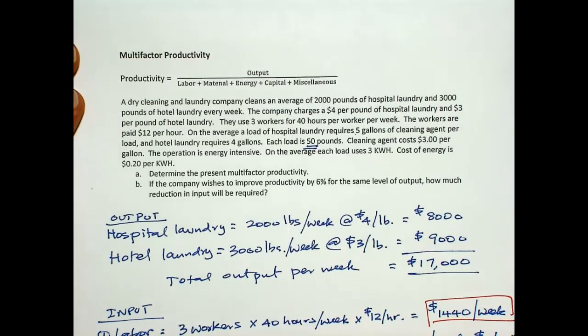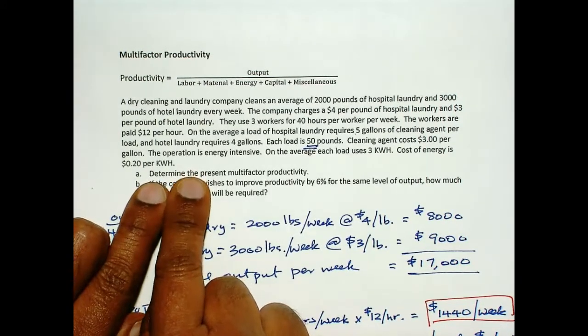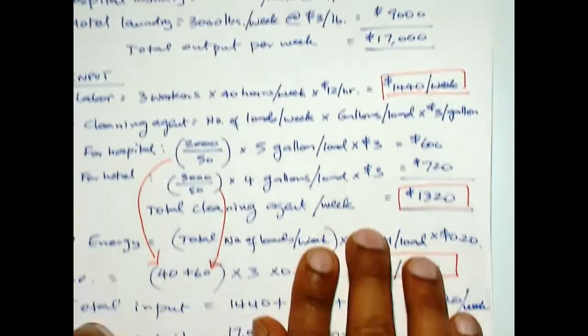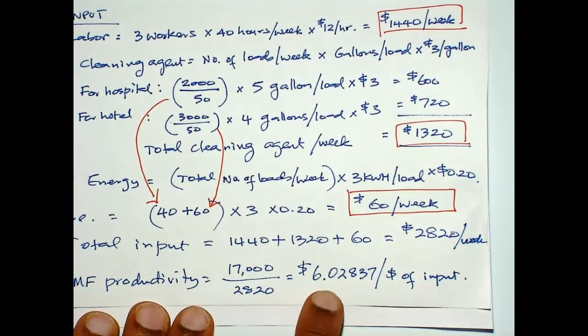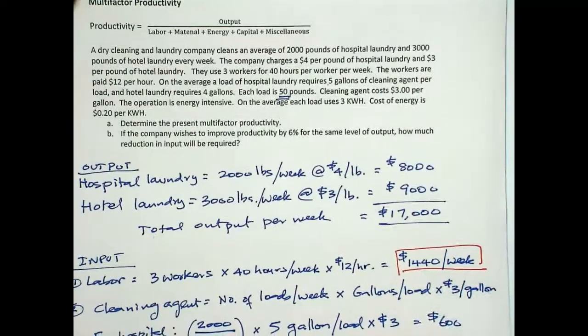Okay, now in the previous video we computed the multi-factor productivity which turned out to be 6.02837 per dollar of input.